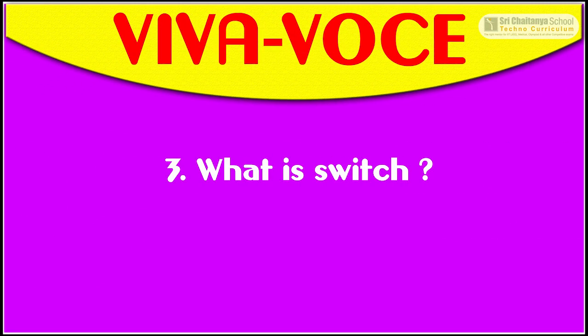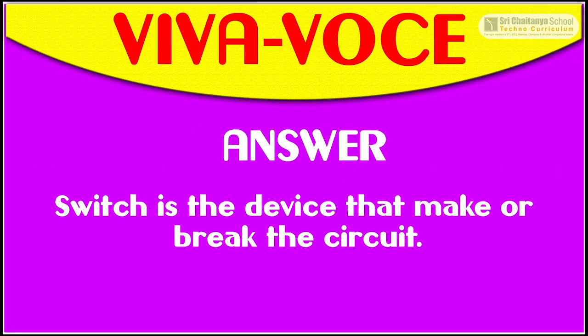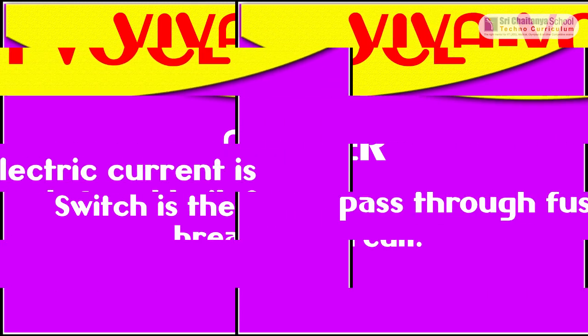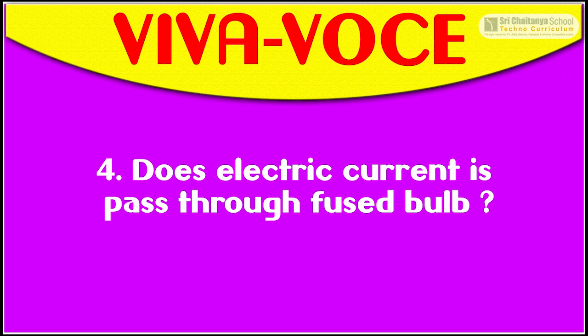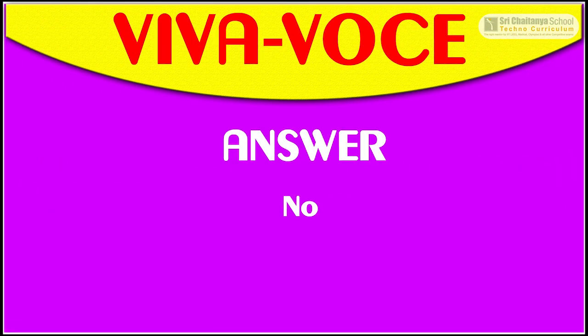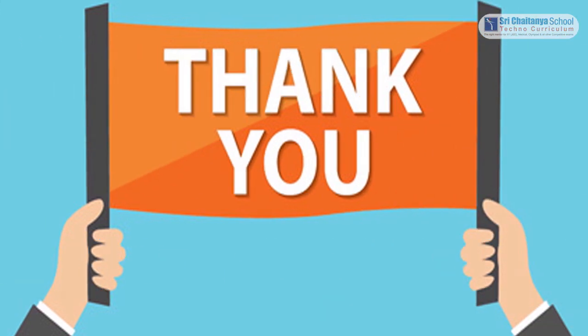The third question is: what is a switch? The answer is: a switch is a device that makes or breaks the circuit. The final question is: does electric current pass through a fused bulb? The answer is: no. Thank you.